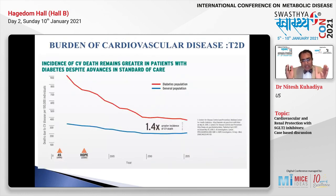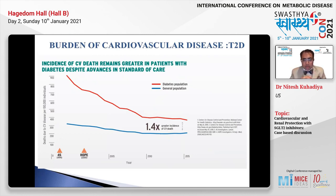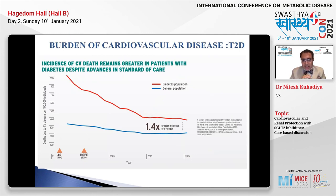In the last two decades, the incidence of CV death in patients with diabetes has gone down compared to the general population, attributable to higher use of aspirin, statins, ACE inhibitors/ARBs, and beta-blockers. But it's not enough — in 2015, patients with diabetes still had one and a half times greater incidence of cardiovascular death.